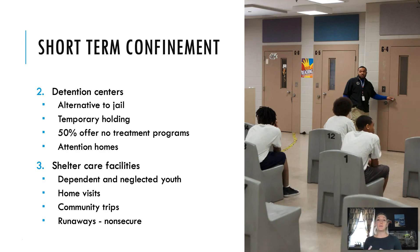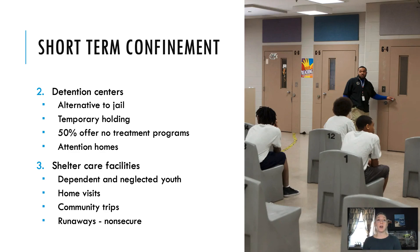Shelter care facilities were specifically created for dependent and neglected youth because the JJDPA mandated that non-criminal youth be placed in facilities separate from criminal or delinquent youth. Delinquent youth can be placed in shelter care under certain circumstances — it has to be that the child is not continually displaying delinquent behaviors but is displaying more dependent behaviors. These facilities allow a lot more freedom: home visits, community trips, community service. The issue is there are a lot of runaways because they're not as secure as detention facilities.